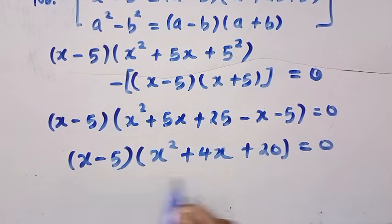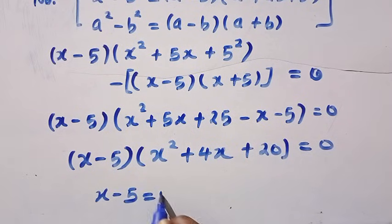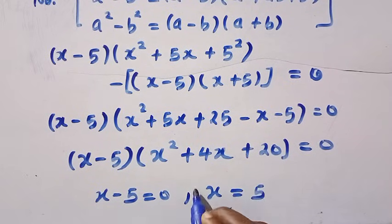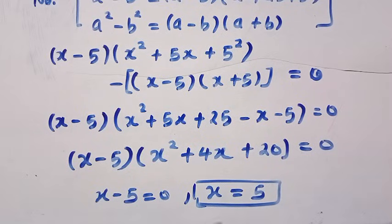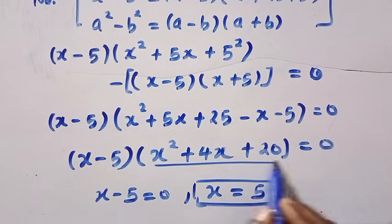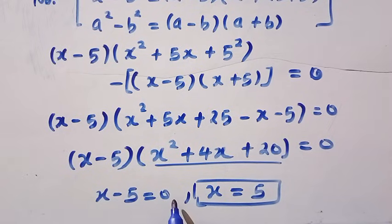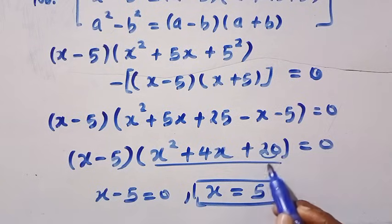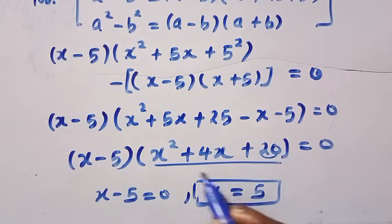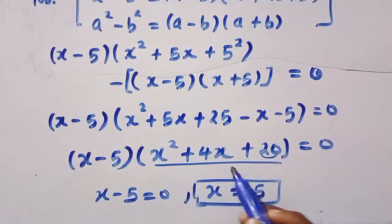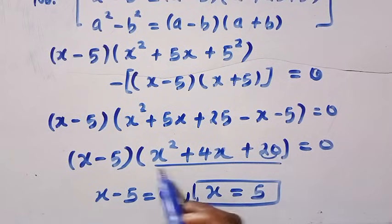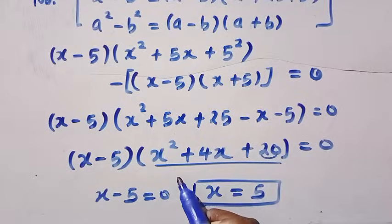From these two factors, either x minus 5 equals 0, which gives us x equals 5 — this is the first, real solution. The other factor, x squared plus 4x plus 20 equals 0, has a discriminant that is less than 0, so we should expect complex solutions from this second factor.